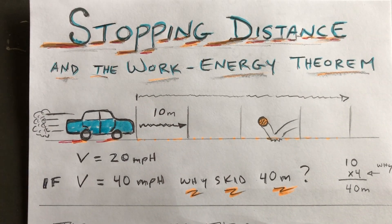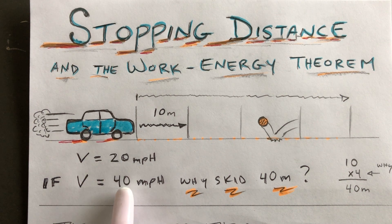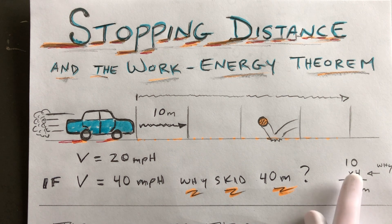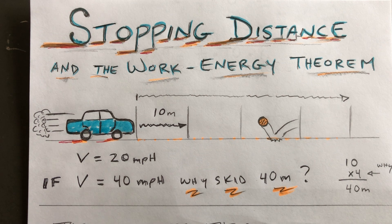All you have to do is realize that since the velocity was twice as much, two times two is four, so ten times four would be the 40 meters. Hopefully this helps you out with stopping or skidding distance with kinetic energy.